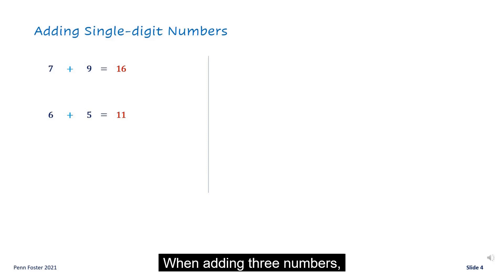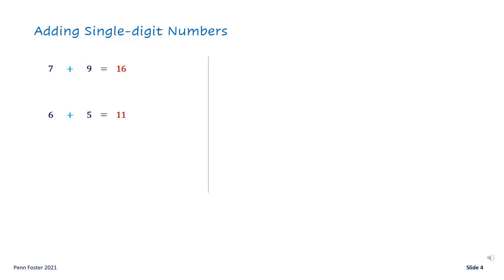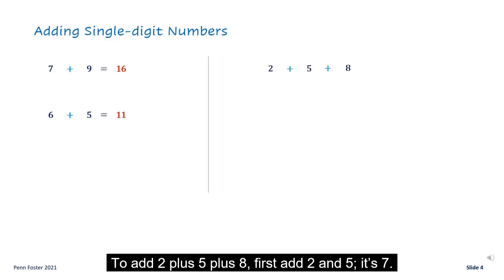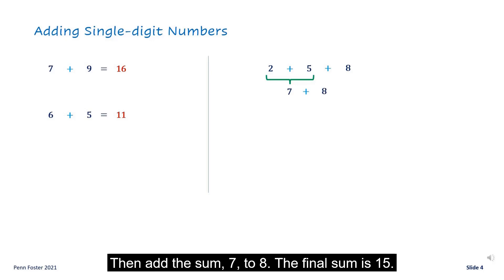When adding three numbers, break down the problem to add two numbers at a time. To add two plus five plus eight, first add two and five. It's seven. Then add the sum seven to eight. The final sum is fifteen.